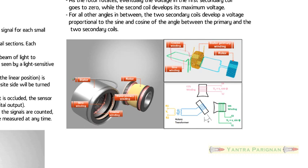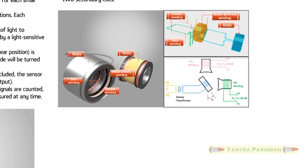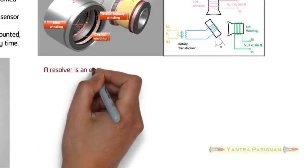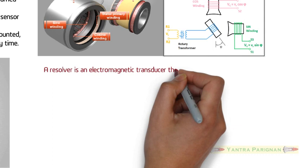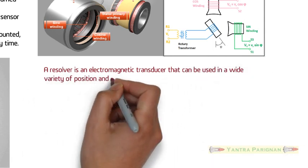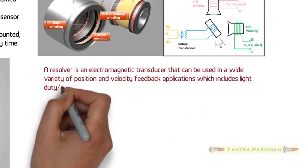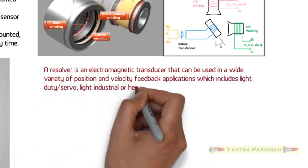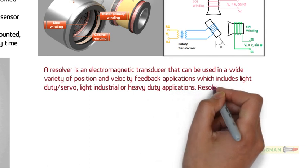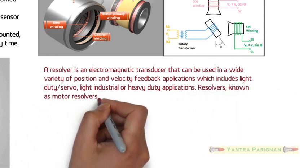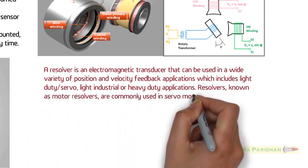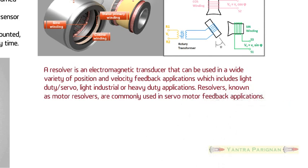The figure shows the stator, rotor, primary winding and two secondary coils in a resolver. A resolver is an electromagnetic transducer that can be used in a wide variety of position and velocity feedback applications which includes light duty or servo, light industrial or heavy duty applications. Resolvers, known as motor resolvers, are commonly used in servo motor feedback applications.